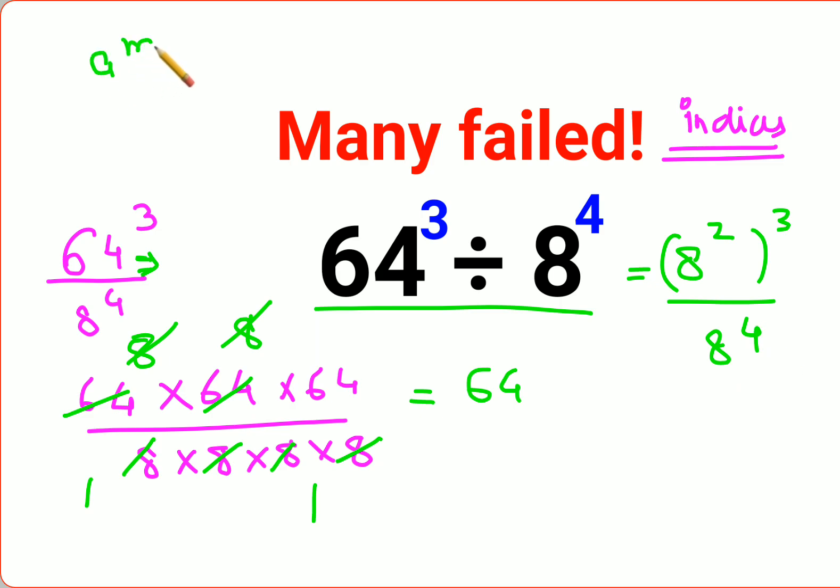Now in indices, a raised to m, the whole raised to n, can be written as a raised to m into n. So this can be written as 8 raised to 2 into 3, which is 8 raised to 6, upon 8 raised to 4.